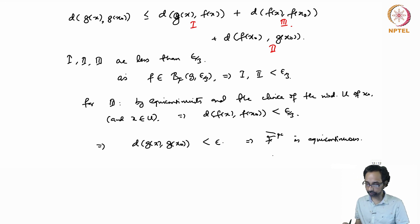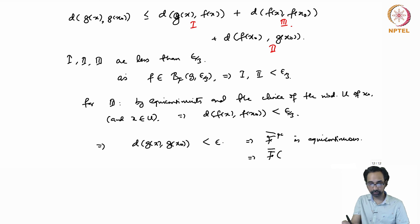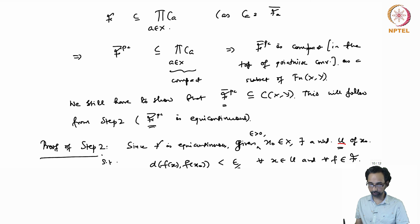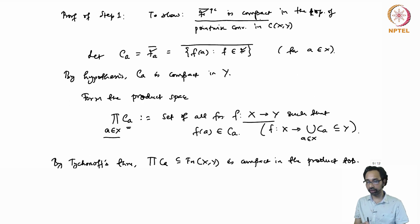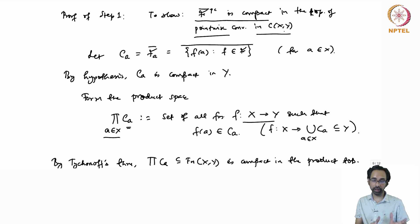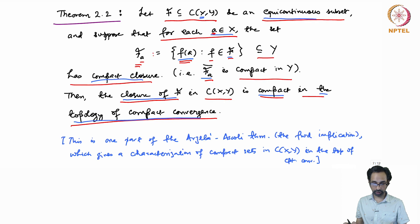From step one we know F_closure_pc is compact in pointwise convergence, and from step two equicontinuity implies it lies in C(X,Y). Since the topology of pointwise convergence and the topology of compact convergence agree on equicontinuous sets, we have also shown that this closure is compact in the topology of compact convergence, which is exactly what the theorem states.